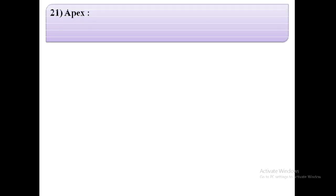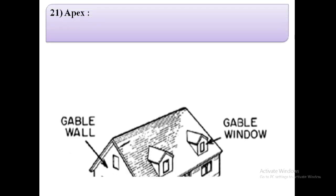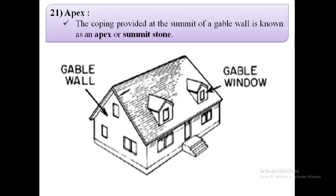The next term is apex. The coping provided at the summit of a gable wall is known as an apex or summit stone. As shown in the image, this is the gable wall, and the coping provided at its summit is the apex or summit stone.